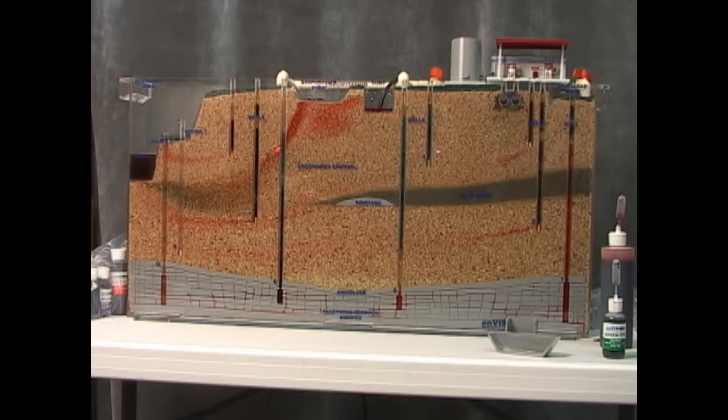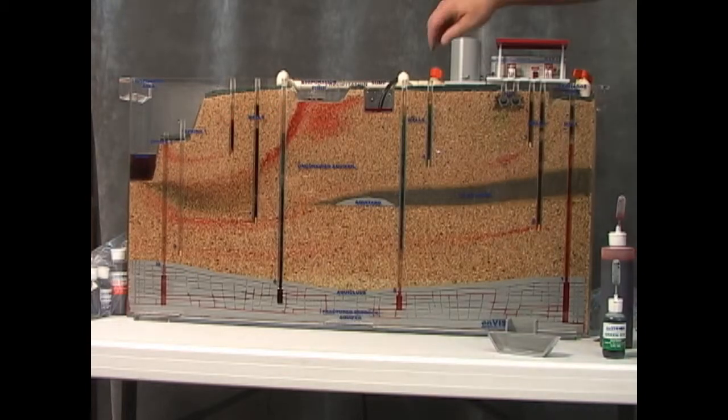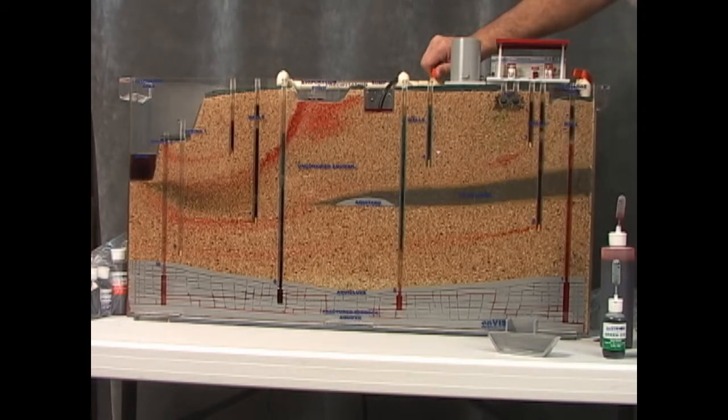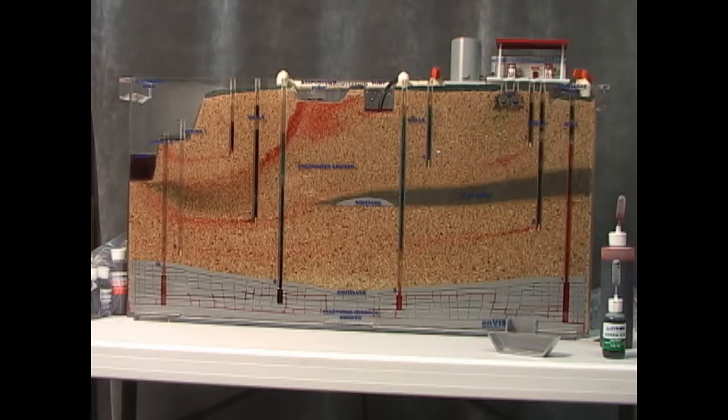And again, we have some really nice traces here going much deeper because of the recharge. If I were to turn that off again, we would see those dyes, I can already see them, as they approach the top of well number six, starting to move across the top of the aquifer, changing their flow paths again.